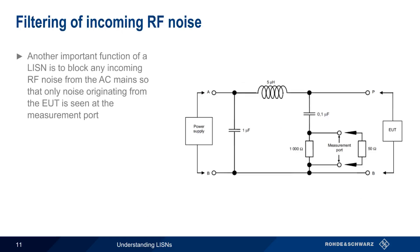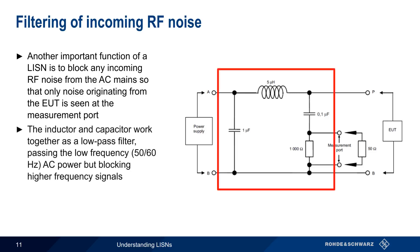Another primary function of a LISN is blocking any RF noise from entering over the AC mains network. This ensures that any noise seen at the measurement port is coming from the EUT and is not being conducted in on the EUT's power cord. The inductor and capacitors in the LISN work together as a low-pass filter, passing the low-frequency AC power but blocking any higher frequency signals.